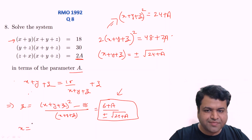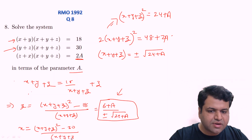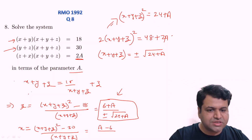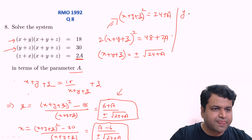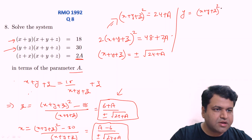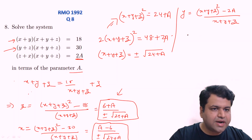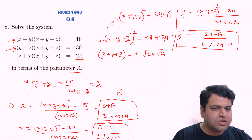By the same logic, x = [(x+y+z)² - 30]/(x+y+z) = (24+a-30)/±√(24+a) = (a-6)/±√(24+a). And y = [(x+y+z)² - 2a]/(x+y+z) = (24+a-2a)/±√(24+a) = (24-a)/±√(24+a). Note that if the sign is plus for one variable, it is plus for all — the signs are consistent throughout.